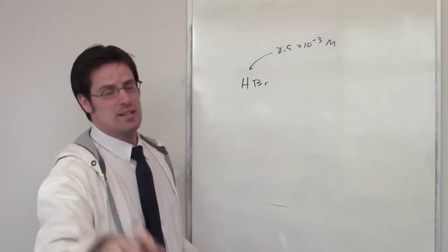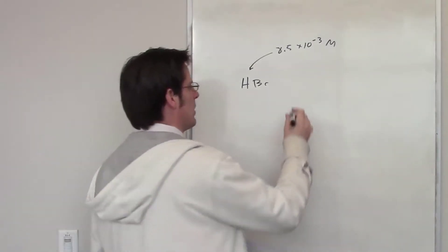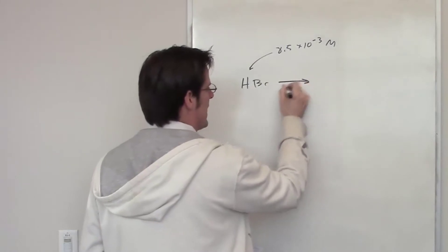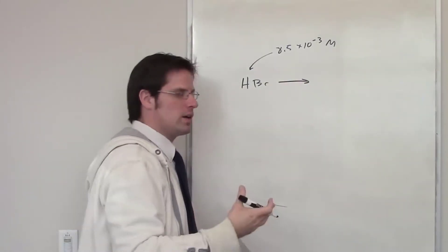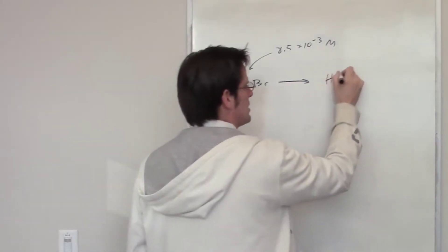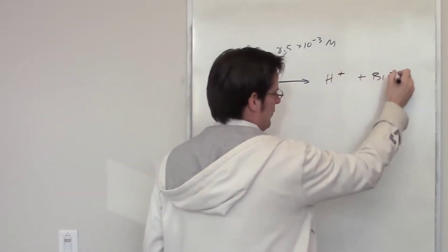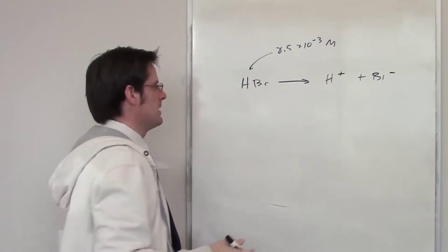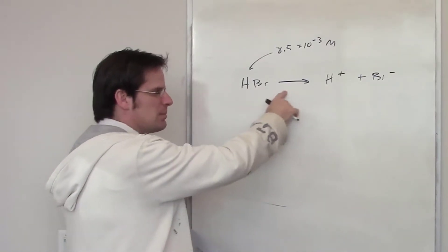In fact it totally is - it's one of the strong acids that I require you memorize. What that means is that when you throw HBr into water, it's going to dissociate with a virtually one-way arrow to form H+ and Br-. Now if this were a weak acid we'd have an equilibrium arrow, but it's a strong acid so it's pretty much virtually one way.